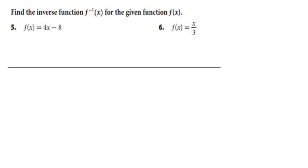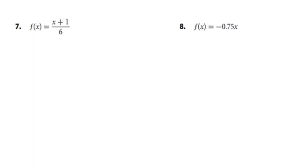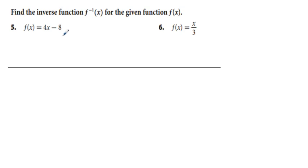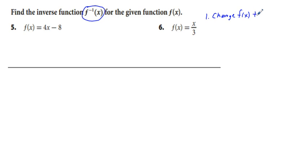For problems 5 through 8: find the inverse function f⁻¹(x). The notation with the negative 1 power is the notation for the inverse function. I'll show a four-step process. Step 1: change f(x) to y. For number 5, we write y equals 4x minus 8.